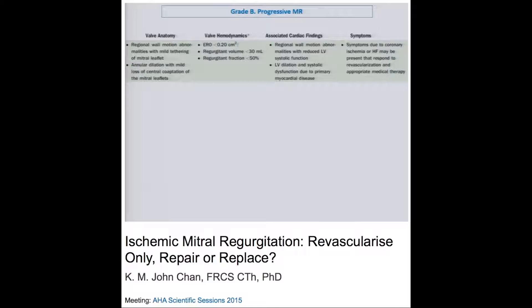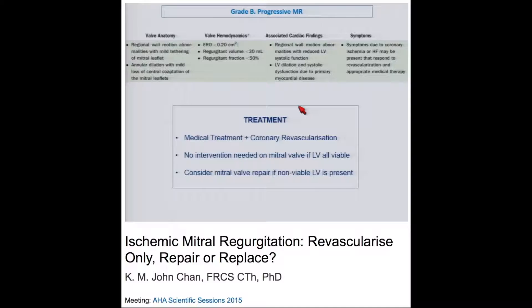The next group — grade B, progressive MR — has more MR quantifiable by PISA, but ERO less than 0.2, regurgitant volume less than 30 mL, regurgitant fraction less than 50%. There is mild leaflet tethering, some annular dilatation, and LV wall motion abnormalities. These patients need optimum medical treatment and coronary revascularization. If the LV is all viable, it will likely recover with revascularization and no mitral valve intervention is needed. But if there are significant non-viable LV segments, mitral valve repair should be considered.